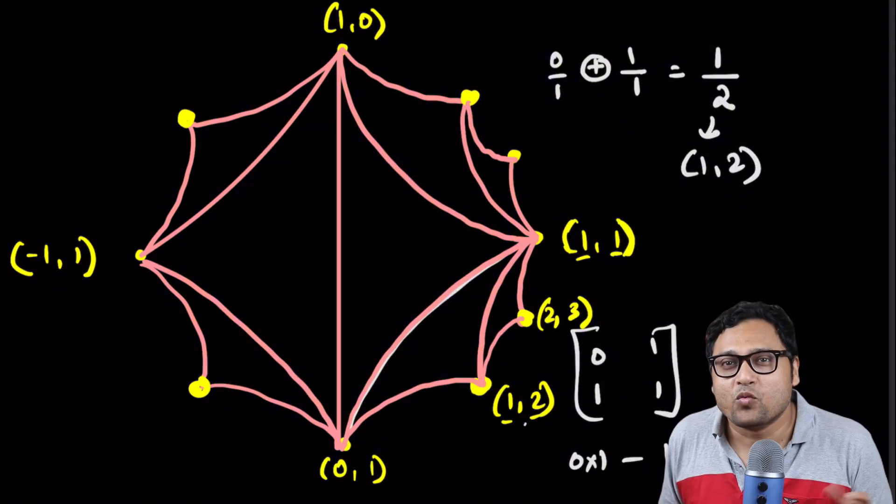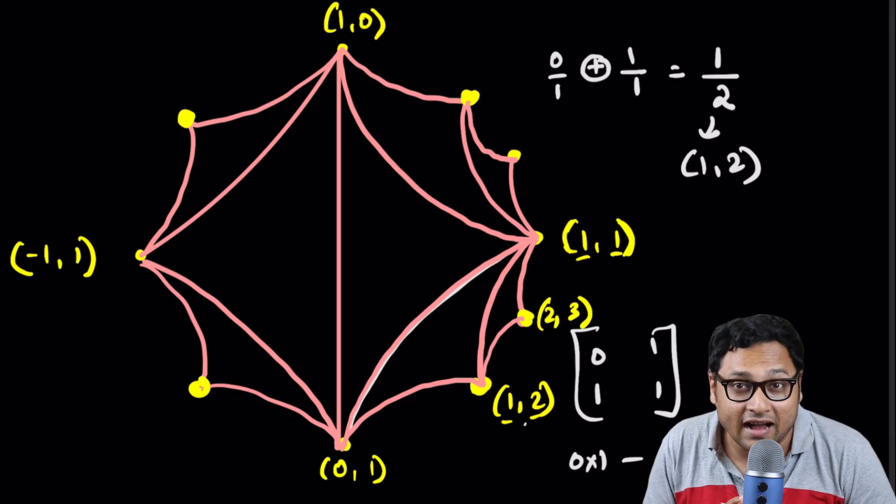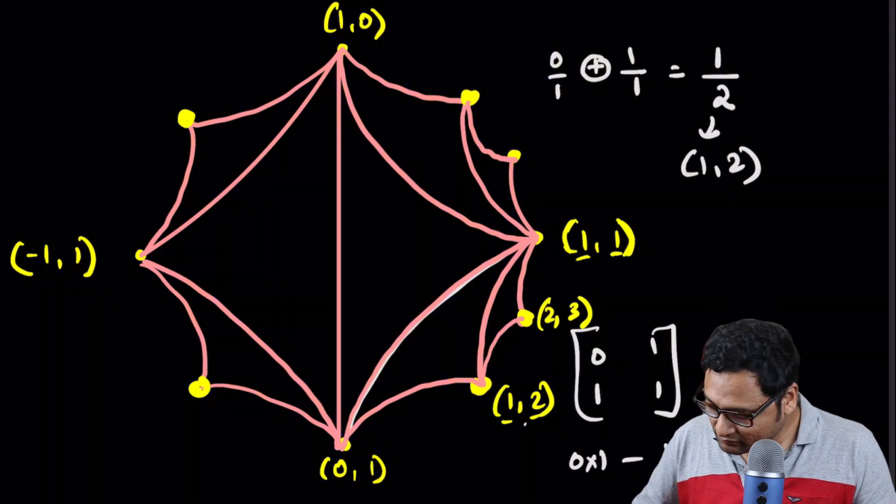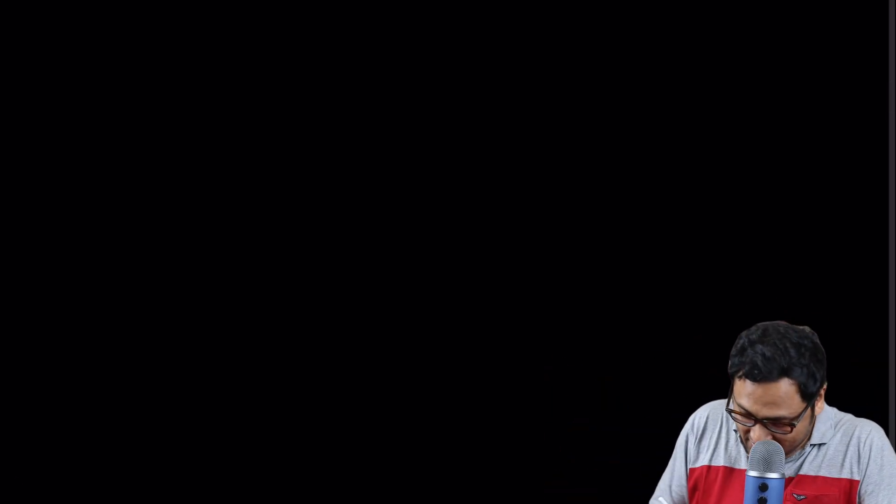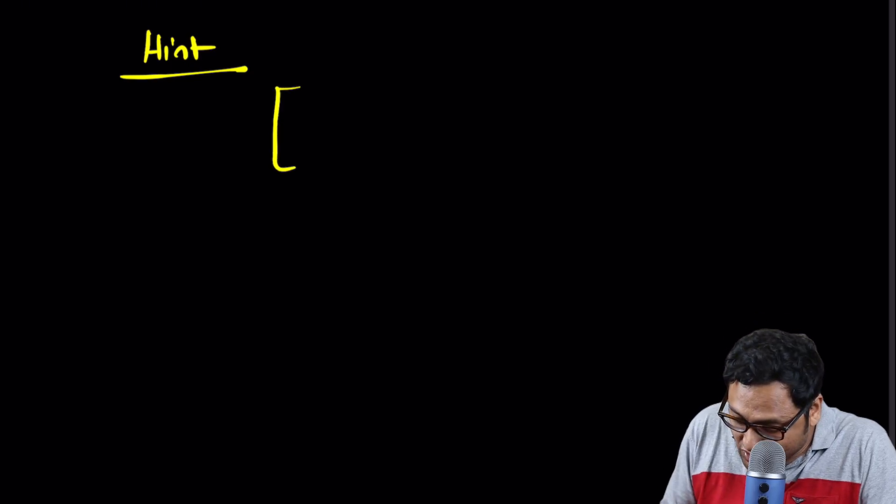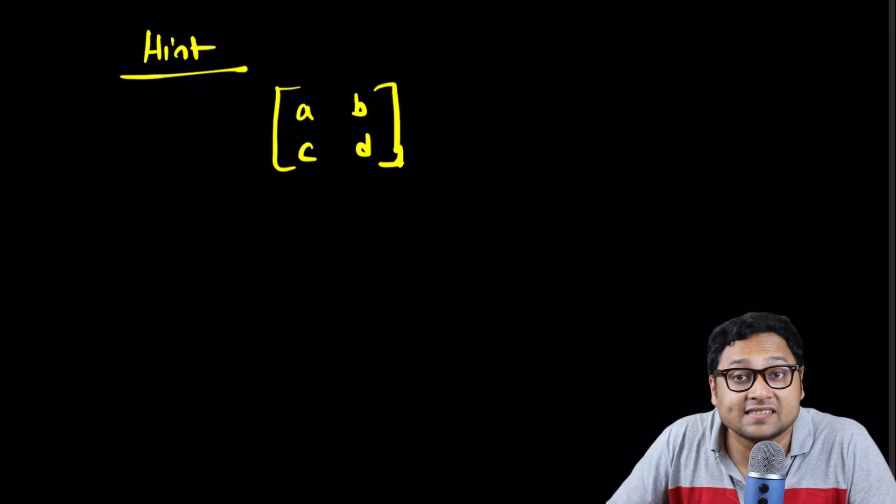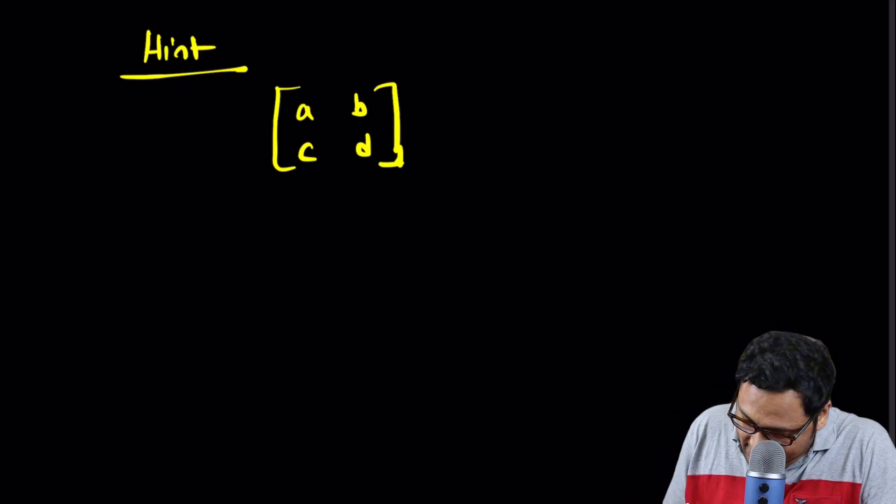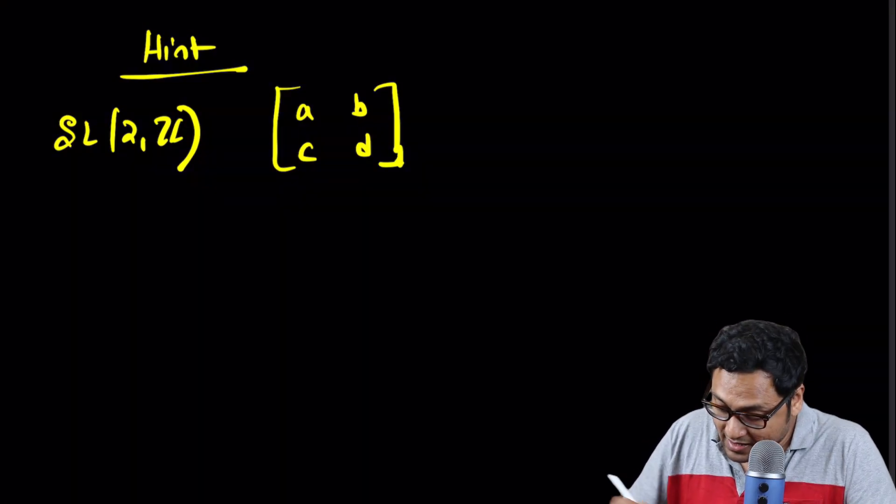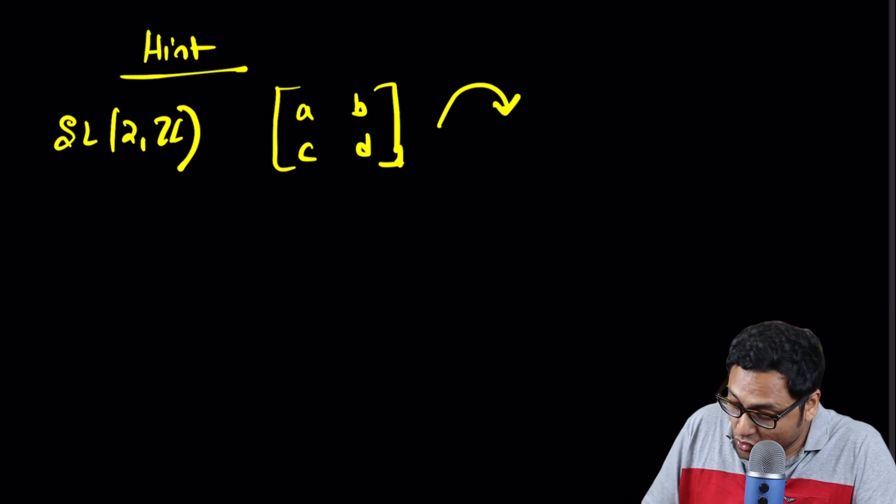Now, the question is, what is the relationship of this beautiful looking graph with hyperbolic geometry or geometry in general? I will not be able to speak about all of it today because it's a vast, vast subject. But here is a hint for you. If you are familiar with Mobius transformations, Mobius transformations are often denoted by matrices ABCD, whose determinant is 1, denoted by SL2Z.